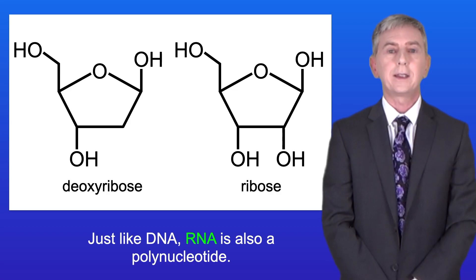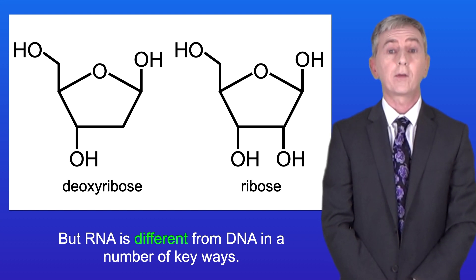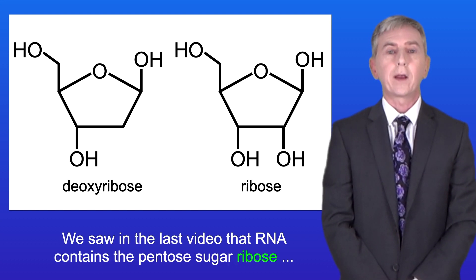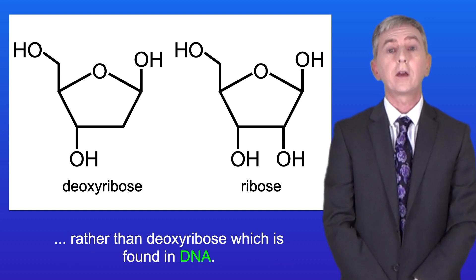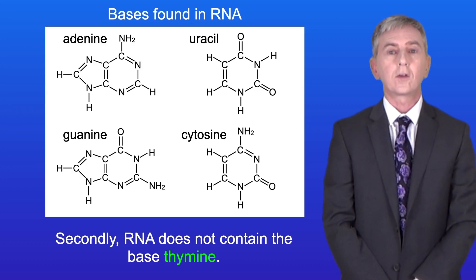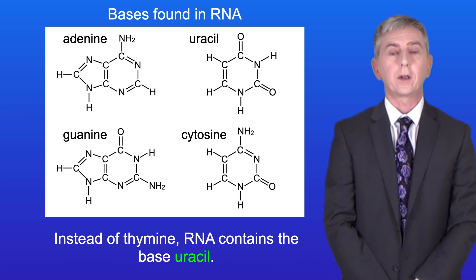Now just like DNA, RNA is also a polynucleotide but RNA is different from DNA in a number of key ways. We saw in the last video that RNA contains the pentose sugar ribose rather than deoxyribose which is found in DNA. Secondly RNA does not contain the base thymine. Instead of thymine RNA contains the base uracil.